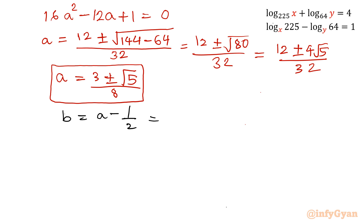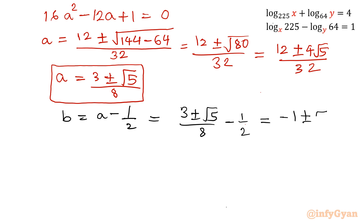Since b equals a minus 1/2, substituting gives b equals (3 plus or minus root 5) over 8 minus 1/2, which equals (3 plus or minus root 5 minus 4) over 8, so b equals (negative 1 plus or minus root 5) over 8. Therefore a equals (3 plus or minus root 5) over 8 and b equals (negative 1 plus or minus root 5) over 8.